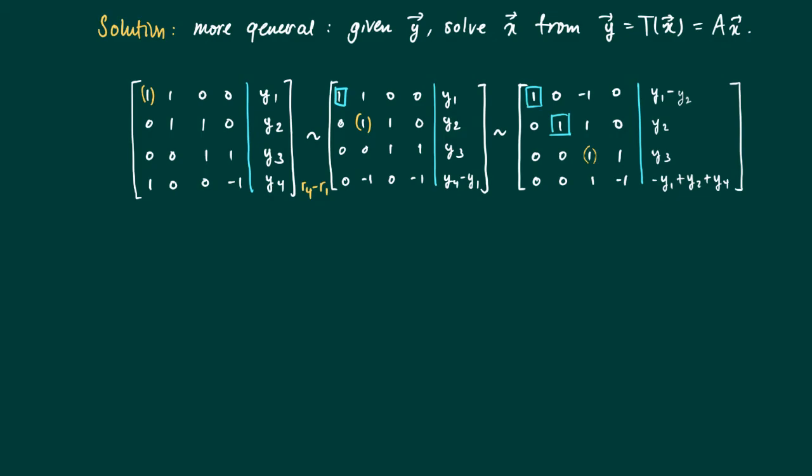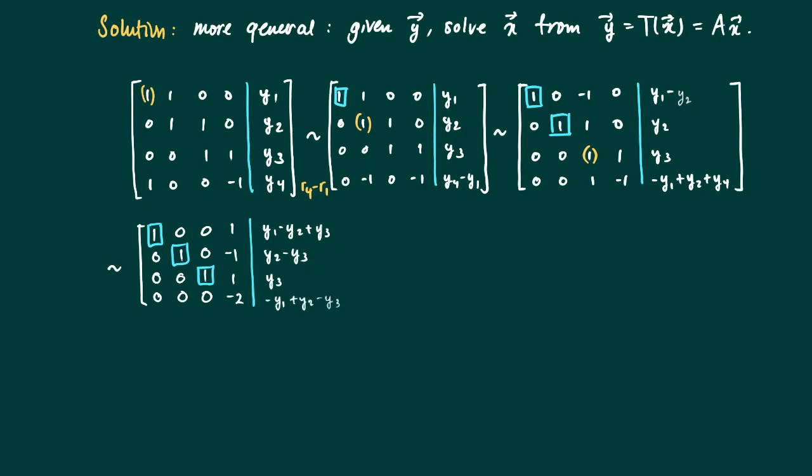So now we have two pivots, we need two more ideally. So we can create a third one. By sweeping column 3, creating zeros above and below position 3, 3. In order to do so we need to add row 3 to row 1, subtract it from row 2, and subtract it from row 3. So actually we obtain plus y3 over here, minus y3 over here, minus y3 over there.